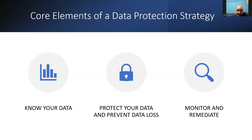We need to protect data and prevent data loss — that's our second point. We protect sensitive data through data protection policies, which help us to label and encrypt data, or block oversharing. We need to ensure that only authorized users are able to access the data — the very first principle of Zero Trust: verify explicitly. We need to ensure only authorized users are able to access data, even when data travels outside our corporate environment.